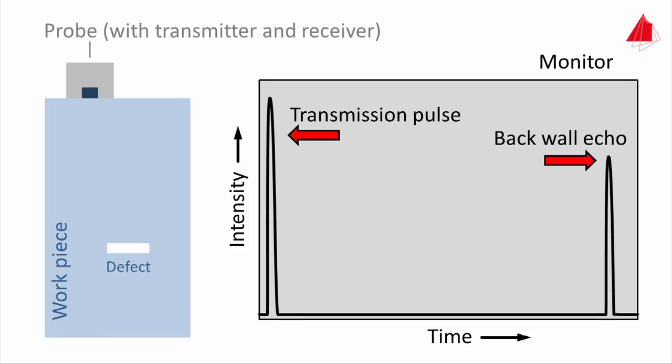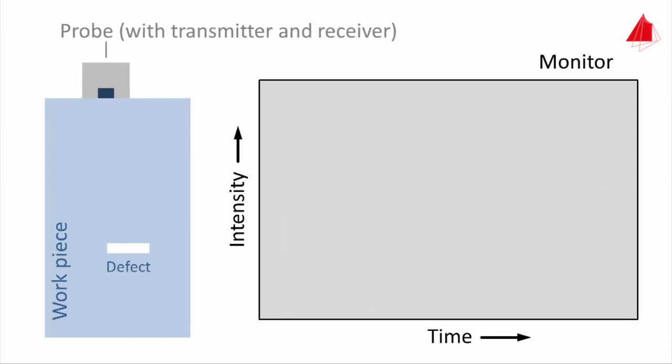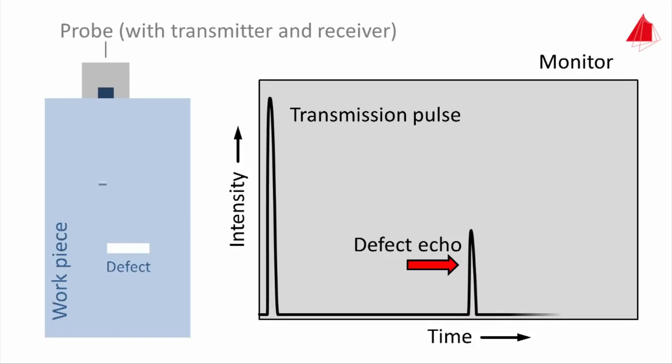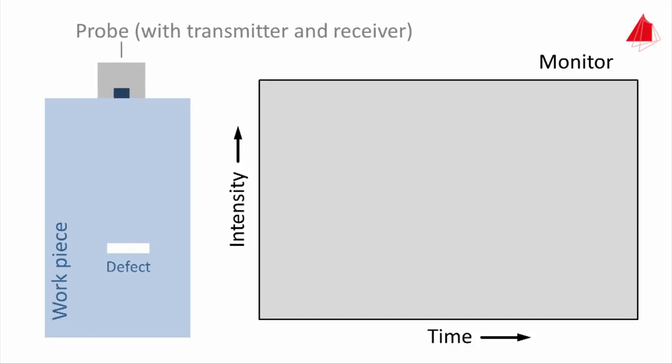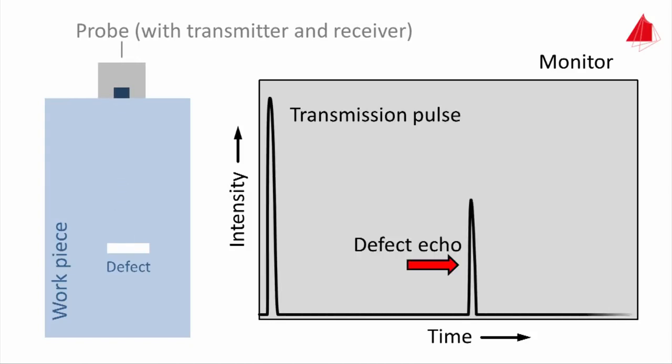Moving the probe towards the right leads to an additional echo created by the defect. Even further towards the right, only the defect echo is visible apart from the transmission pulse.